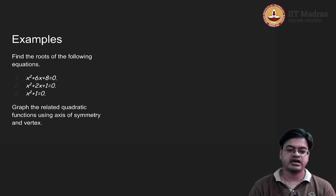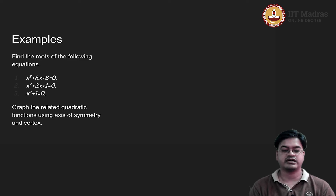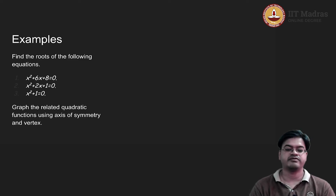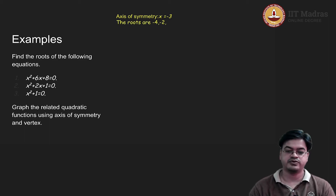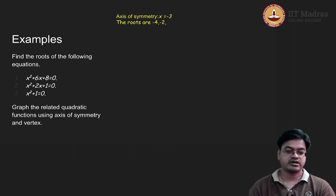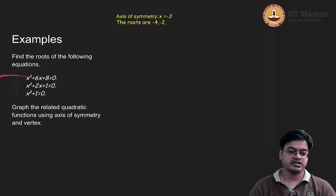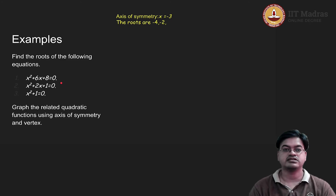We will graph the related quadratic function using the axis of symmetry and vertex. The axis of symmetry is x = -3, the roots are -4 and -2, and therefore the quadratic equation x² + 6x + 8 = 0 has two real solutions: x = -4 and x = -2.